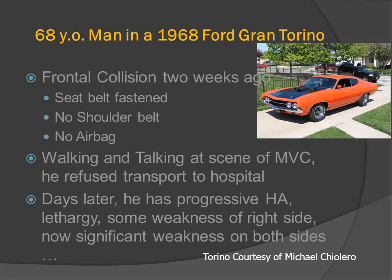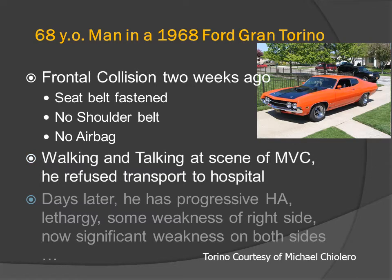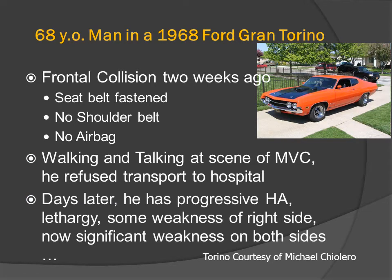Let's take a typical case. A 68-year-old man is in a 1968 Ford Gran Torino. He was in a frontal collision two weeks ago. His seat belt was fastened, but in 1968, shoulder belts were not required, and neither were airbags. He was walking and talking at the scene of the motor vehicle crash and refused transport to the hospital. Days later, he had progressive headache, lethargy, and some weakness of his right side that has now progressed to significant weakness on both sides.